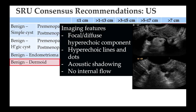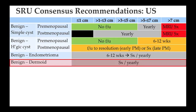Dermoid has distinctive imaging features, usually with focal or diffuse hyperechoic components, hyperechoic lines and dots, and acoustic shadowing. There is no internal flow. Usually these patients are either followed up yearly to make sure the size is not increasing, or managed with surgery.